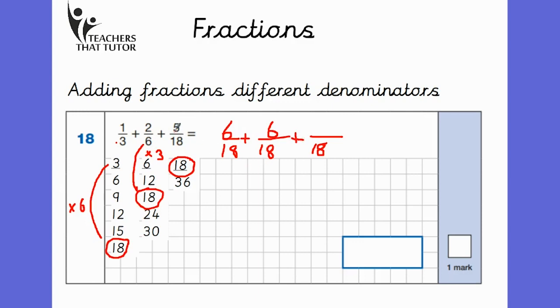The final one, we don't need to change because it's already in 18ths. So I'm going to keep that as 5 18ths. Now all of these fractions have the same denominators, I can go ahead and add them. 6 add 6 is 12, add 5 is 17, giving us a final answer of 17 18ths. Don't forget to write your answer in the box provided.